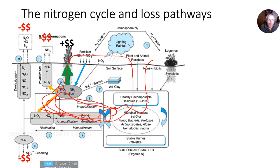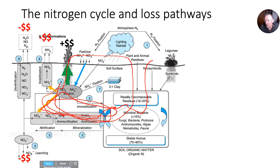These represent big money losses. Ammonia is also a creator of smog — it's one of the drivers of smog along the front range, for example. Denitrification emits nitrous oxide N₂O, which is a powerful greenhouse gas. So these are not only losses of money to producers, but they're important environmental degradation factors.